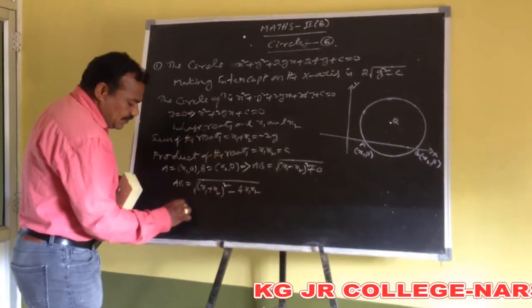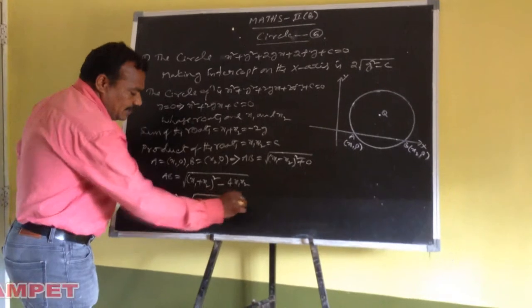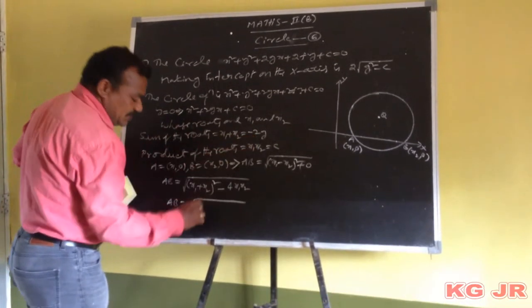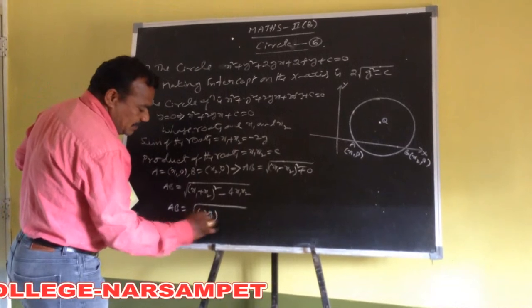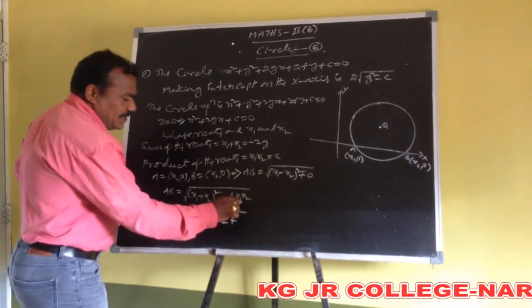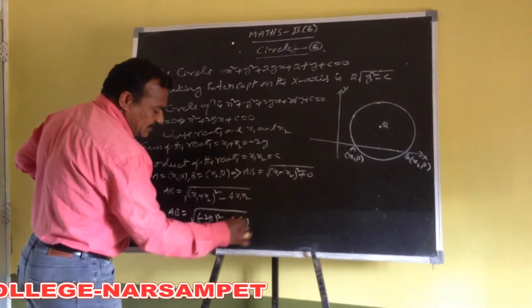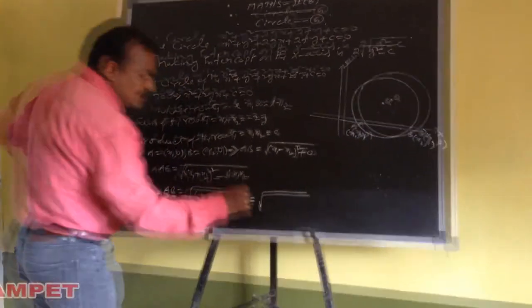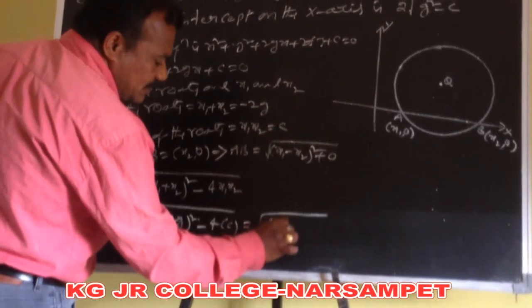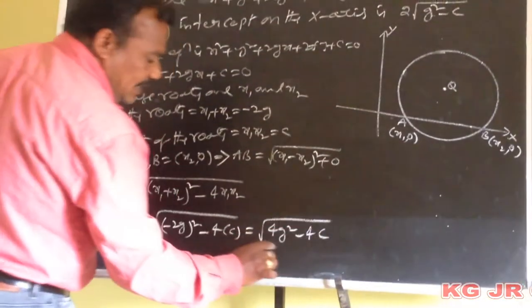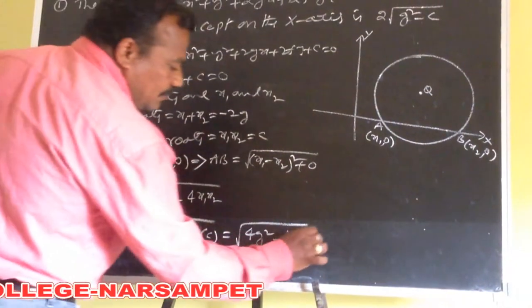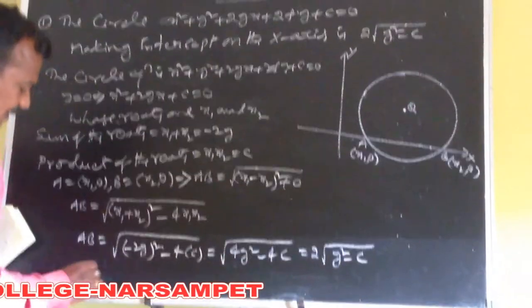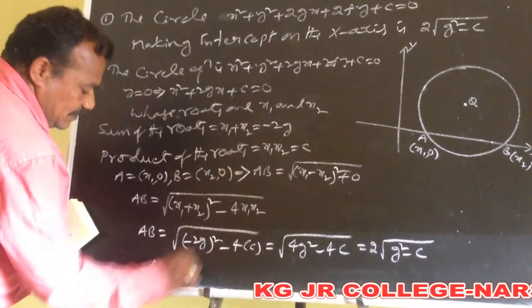Writing this result: AB equals under root of (x1 plus x2)² minus 4·x1·x2. Already we know x1 plus x2 equals minus 2g, so (minus 2g)² minus 4c. That gives under root of 4g square minus 4c, and under root of 4 is 2, so AB equals 2 into root of g square minus c.